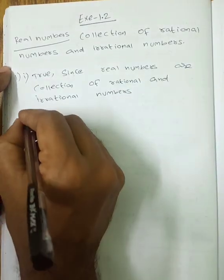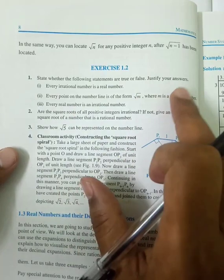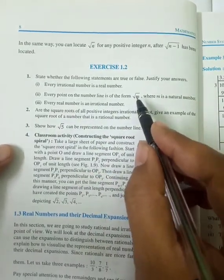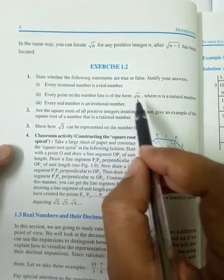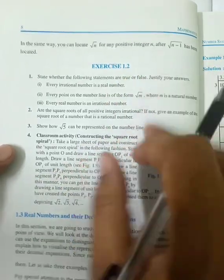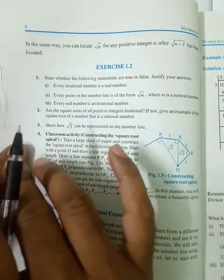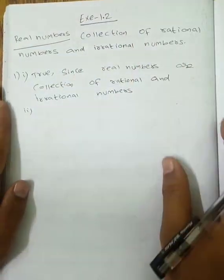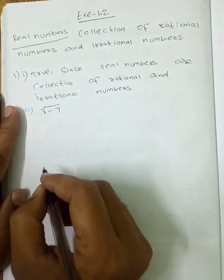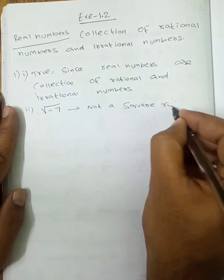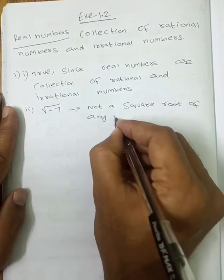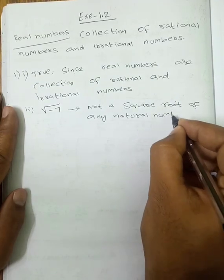Second question: Every point on the number line is of the form √M, where M is a natural number. The form √M means √1, √2, √3, and so on. However, consider √(−7) — this is not the square root of any natural number. So the answer is False.